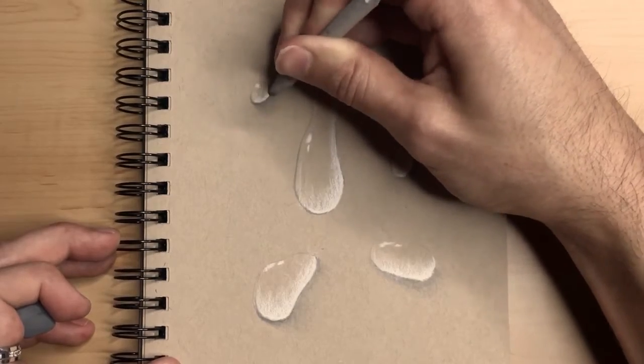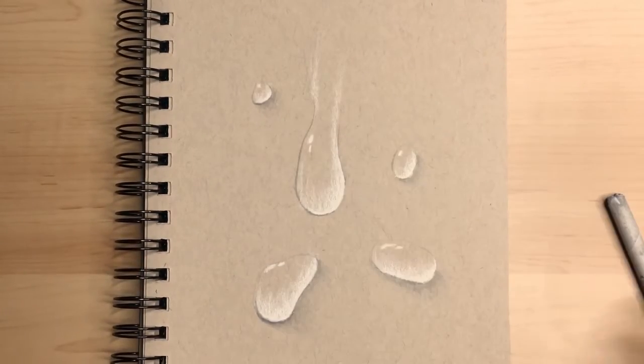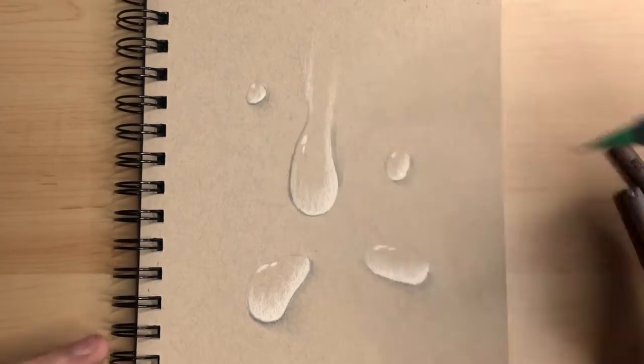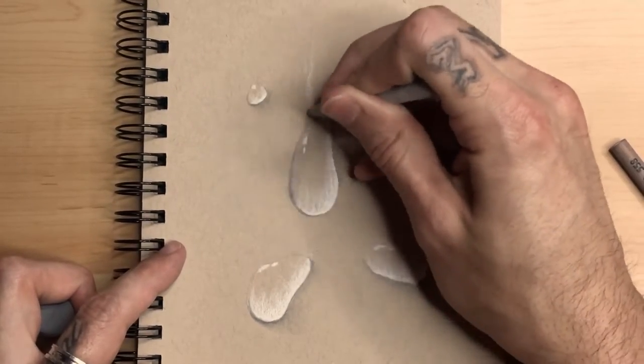I sometimes use my kneaded eraser to clean up some of the extra little spots that make it look more transparent. Then I'm over here just darkening it up.